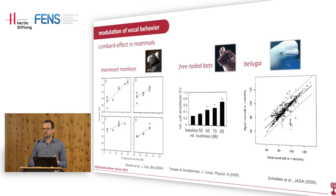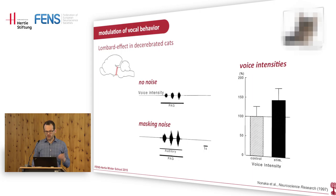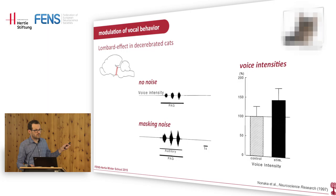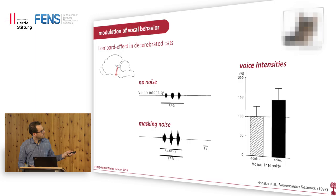This effect seems to be ancient — we can find it in more or less all mammals and all birds that have been tested. For example, marmoset monkeys, free-tailed bats, and even belugas all show an increase in call amplitude with increasing background noise. This is a remarkably preserved effect across species.